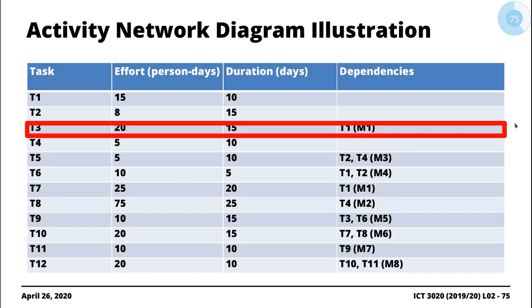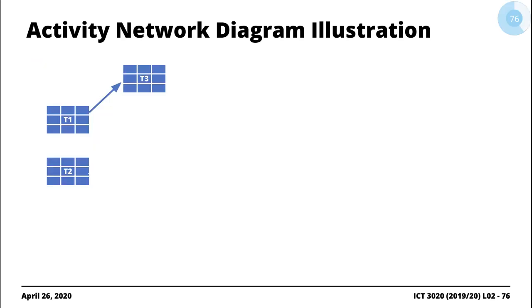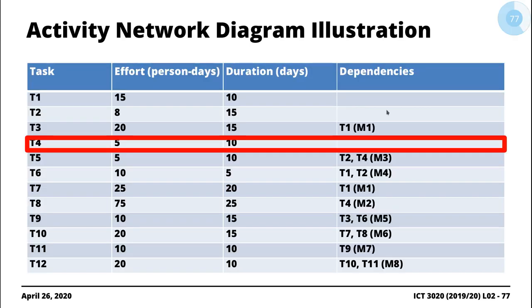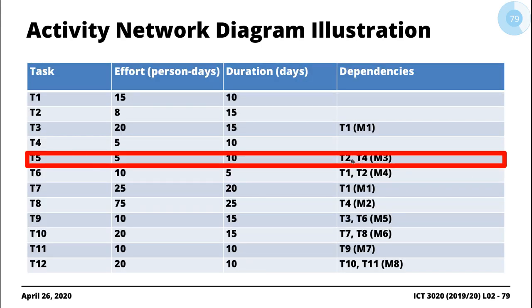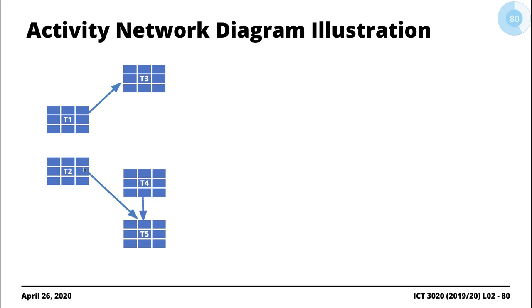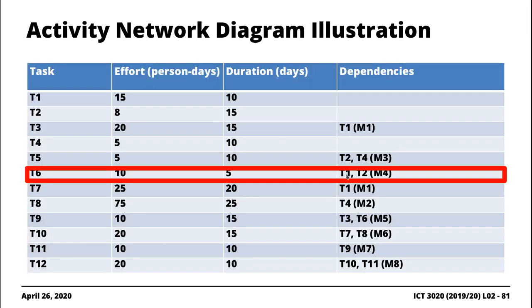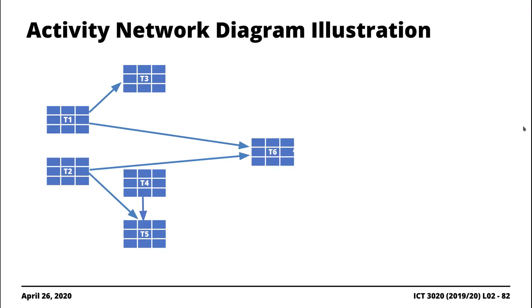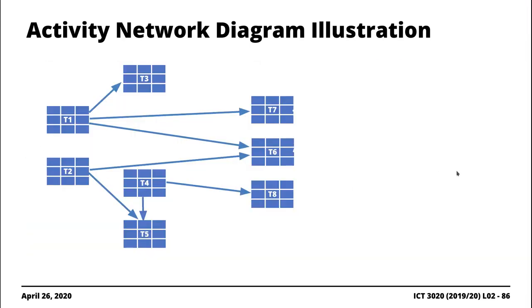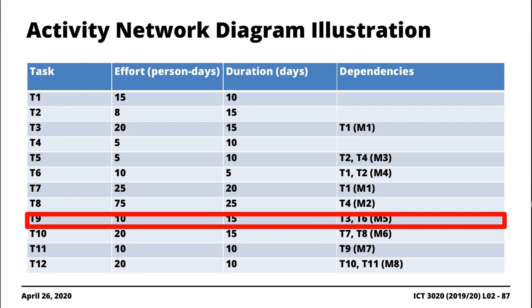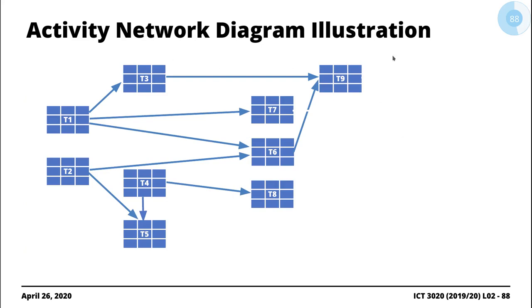Task three has a dependence on task one, so we draw an arrow originating from T1 going to T3. Task four has no dependencies. Task five is dependent on T2 and T4, so we draw arrows from T2 and T4 going into T5. Task six has dependencies on T1 and T2. Task seven is dependent on T1, with an arrow pointing to T7. T8 has a dependence on T4, with an arrow from T4 to T8. T9 has a dependence on T3 and T6, so arrows from T3 and T6 go to T9.